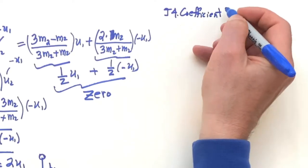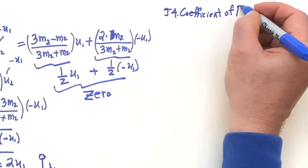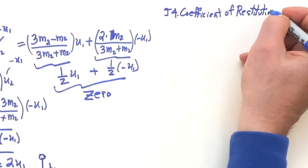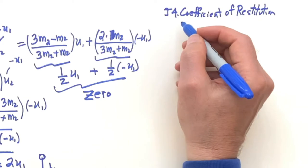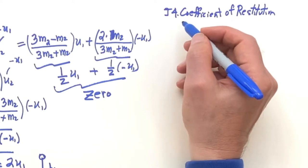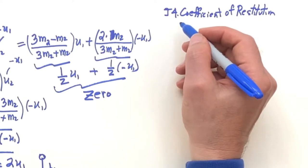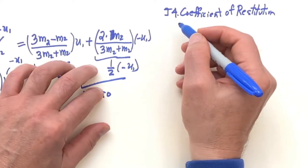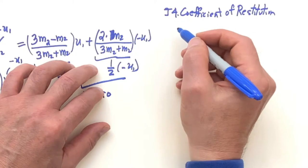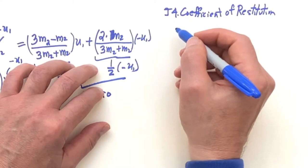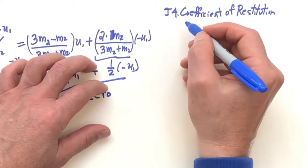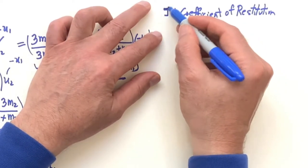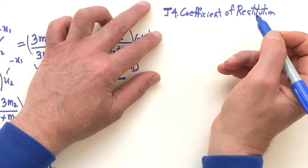J4: coefficient of restitution. We've looked at cases where we assumed perfect bounces off the floor with a ball — a rubber ball bouncing. In fact, the Superball is one that bounces quite high. But we're going to define a coefficient that is now realistic.